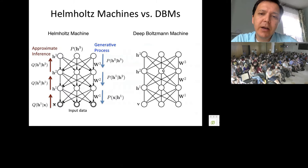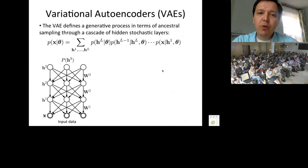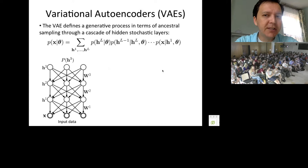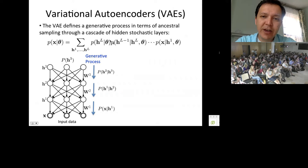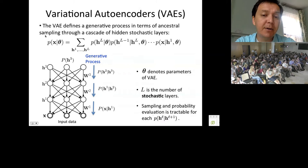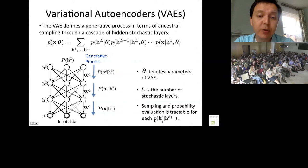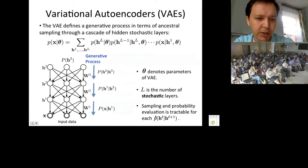The Variational Autoencoder is an instance of a Helmholtz machine with a special trick. It defines a generative process via ancestral sampling through stochastic hidden layers: a prior over the highest level, then a series of conditionals, marginalizing over all hidden variable states. The parameters θ denote the generative model parameters and L is the number of stochastic layers. A requirement is being able to sample from and evaluate each conditional probability — each conditional can itself be a complicated nonlinear neural network, making these models very powerful.